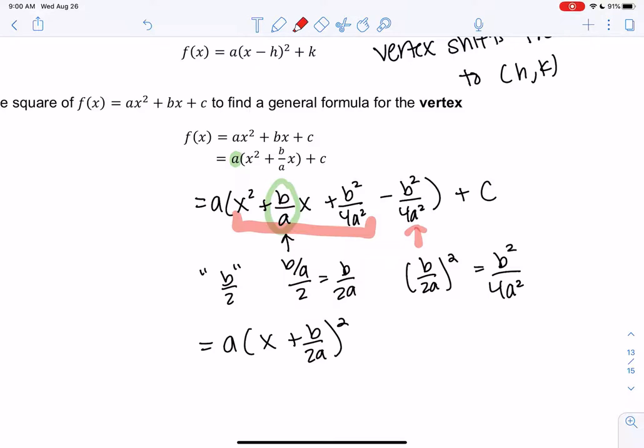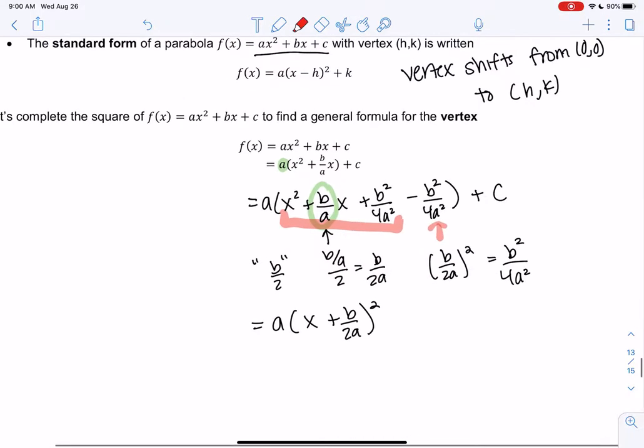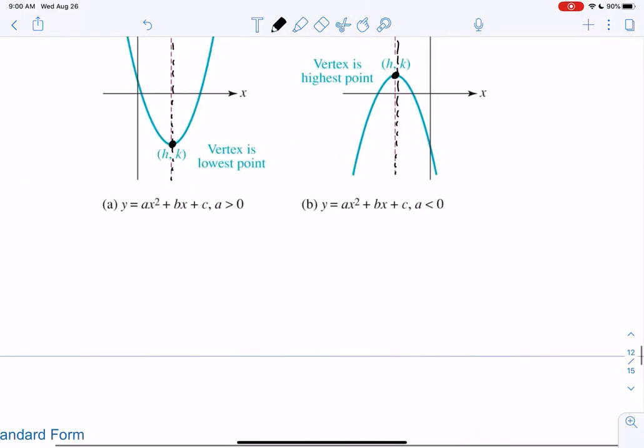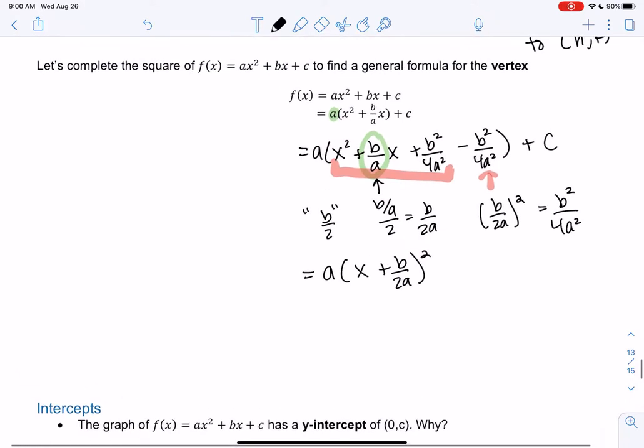I'll link some review of completing the square in case we have no memory of this. But we did do this back in Chapter 1 as well. But this one's a little tricky because it's not numbers. But the rule is, we always divide. So it'll be b over 2. And then add and subtract. This is a short summary.